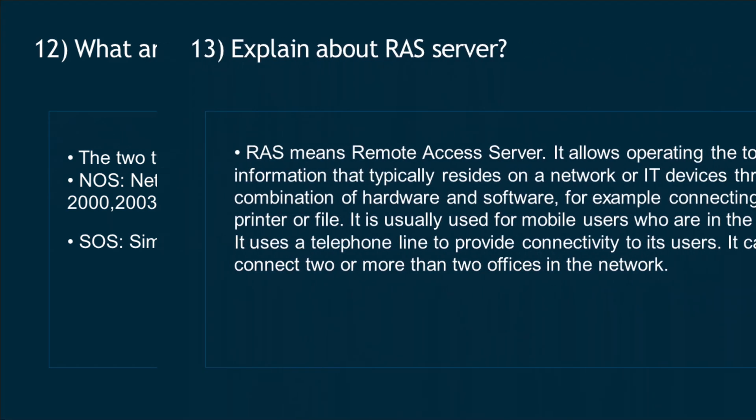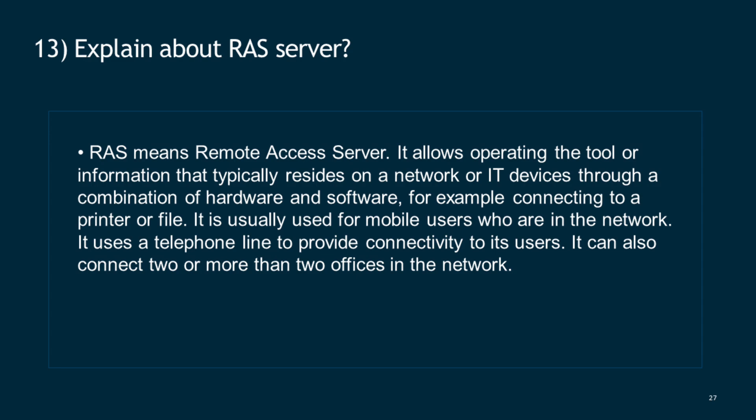Question 13: Explain about RAS server. RAS means Remote Access Server. It allows operating tools or information that typically resides on a network or IT devices through a combination of hardware and software — for example, connecting to a printer or file. It is usually used for mobile users who are on the network and uses a telephone line to provide connectivity.